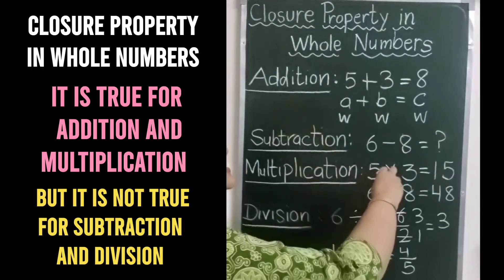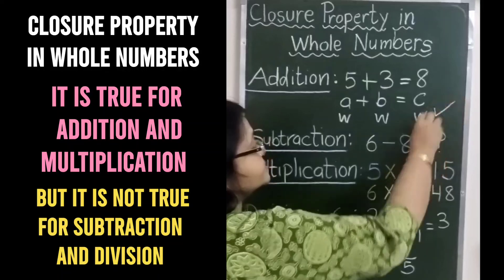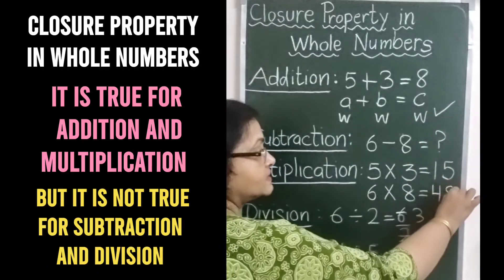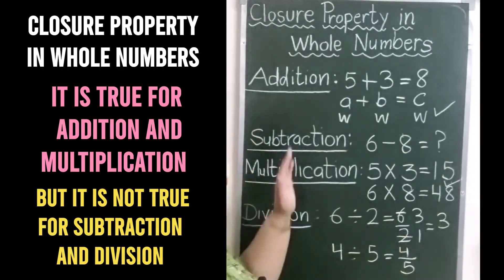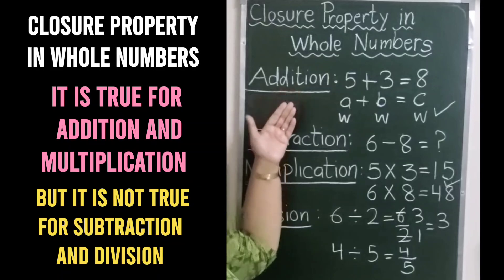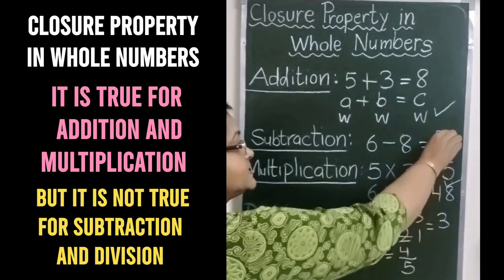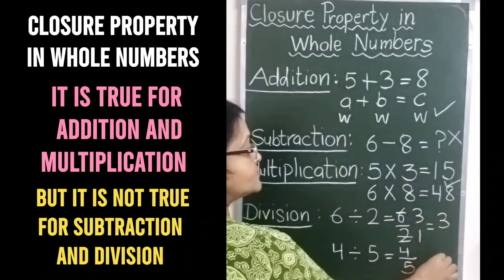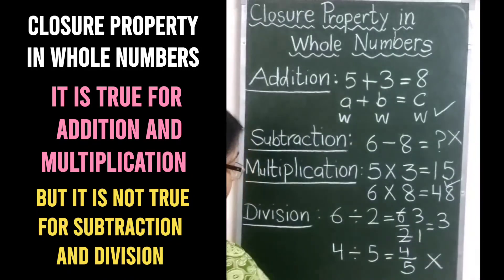So, closure property is true for addition and multiplication. Closure property addition और multiplication के लिए true है. But it is not true for subtraction and division.